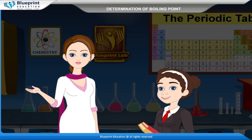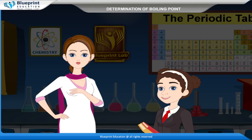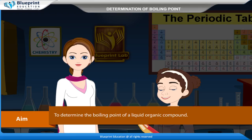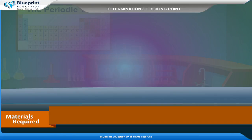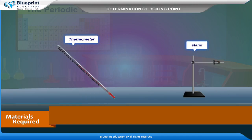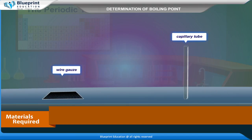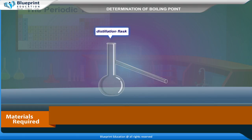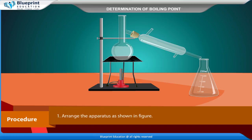Let's do an experiment to determine the boiling point of a liquid organic compound. Our aim is to determine the boiling point of a liquid organic compound. Materials required are: thermometer, stand, wire gauze, capillary tube, conical flask, iron stand with clamp, and distillation flask.